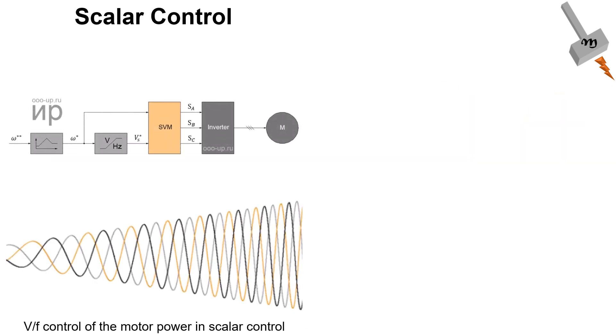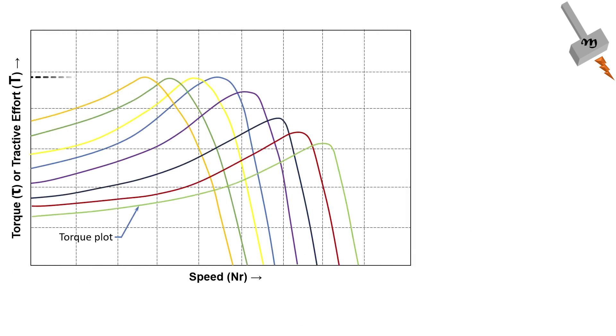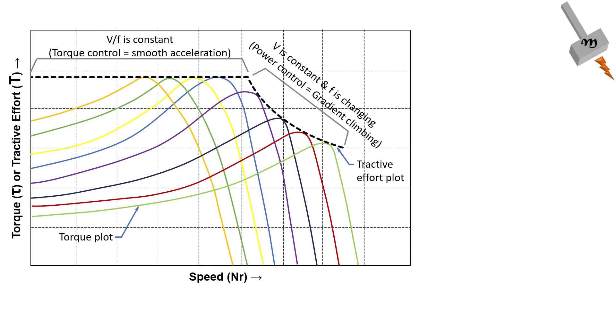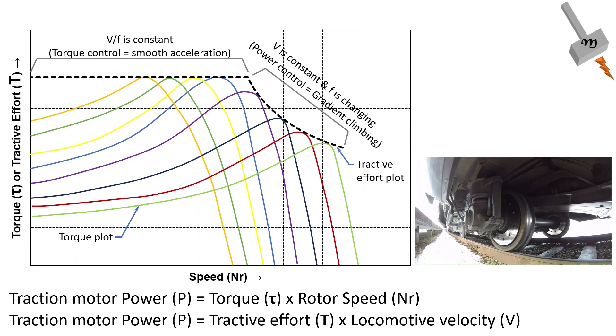Now let's get into the two types of speed control methods. Scalar control, also known as the V by F control, is the simpler of the two methods. It works by adjusting the ratio of the voltage to the frequency supplied to the motor to maintain a constant magnetic flux. The primary goal of scalar control is to ensure the strength of the motor's magnetic field remains constant, which results in consistent torque production.